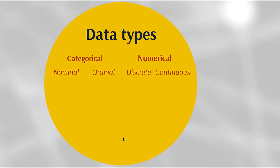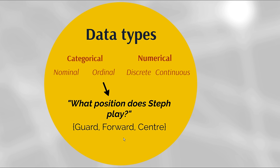The question 'what position does Steph play?' might give us ordinal categorical data. Steph could play guard, forward, or center. There is some loose order to these positions — guards play in the backcourt, forwards play closer to the ring, and the center plays underneath. There's also a general height difference from smaller guards to taller forwards and the tallest at center. So while this is still categorical data, there's some kind of order to it.